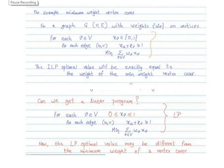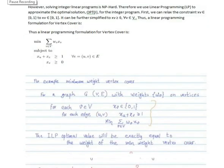Since xv is in {0, 1}, the sum is clearly over all vertices chosen as part of the vertex cover, simply adding their weights. In this integer linear program, the optimal value will be exactly the weight of the minimum weight vertex cover. But ILP is NP-hard, so there is no efficient algorithm for it. Since we have algorithms for LP, what we do is obtain optimal LP solutions and convert them into IP — that is the essence of our approximation algorithm.